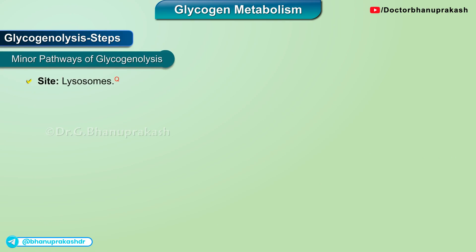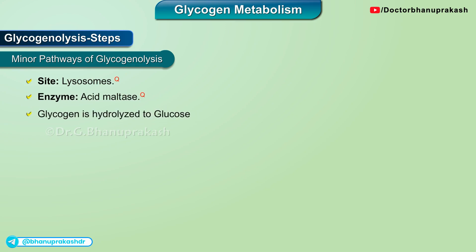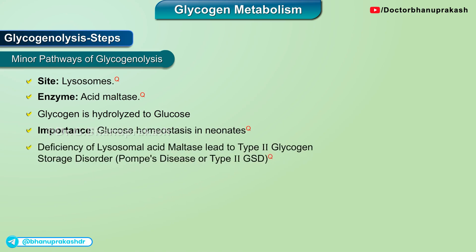Minor pathway of glycogenolysis. Site is lysosomes; enzyme is acid maltase. Glycogen is hydrolyzed to glucose. Its importance is glucose homeostasis in neonates. Deficiency of lysosomal acid maltase leads to type 2 glycogen storage disorder, known as Pompe's disease.